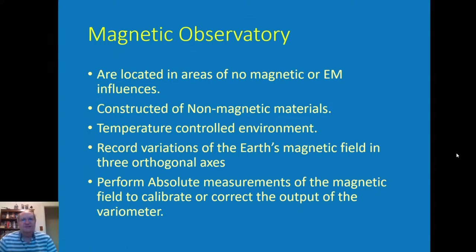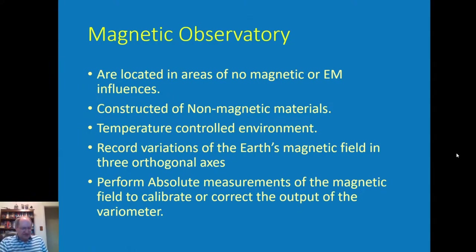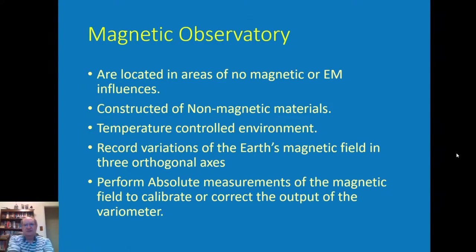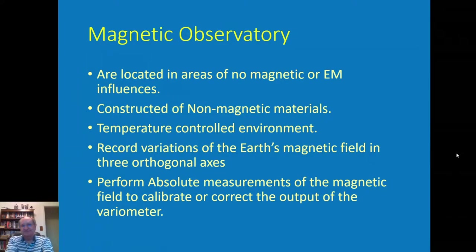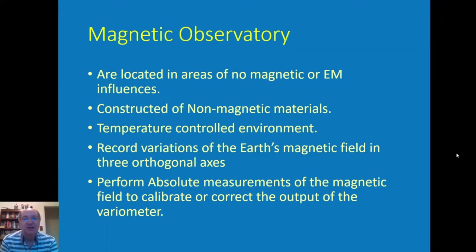All the buildings at an observatory are constructed of non-magnetic materials — no steel nails or any ferrous products. We have to use copper nails or aluminum nails. In the last 10 to 15 years the marine environment has developed silica bronze screws that fit into a screw gun and are mostly non-magnetic. All the magnetometer sensors are in temperature-controlled environments. At high latitudes, you just heat to about 68°F and it stays constant year-round.